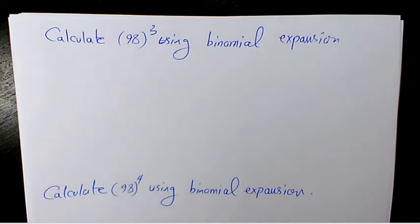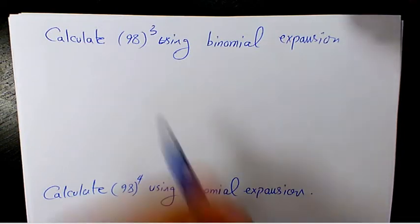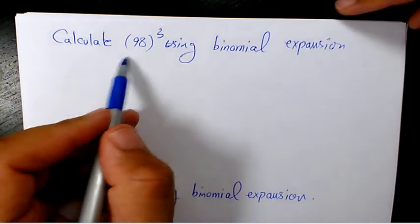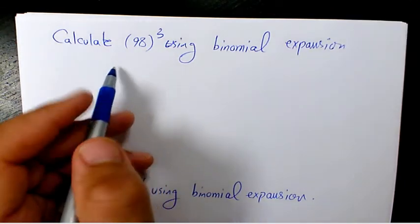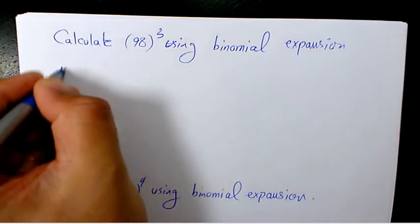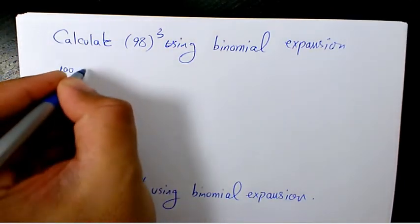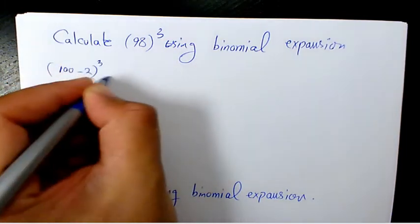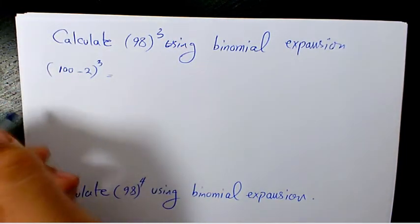What's up guys, this is Massey, welcome to another video. In this video I want to show you how to evaluate 98 to the power of 3 and 98 to the power of 4 using binomial expansion. First of all, I'm going to convert 98 to 100 minus 2, so that's going to be 100 minus 2 to the power of 3, and now we are dealing with a binomial.